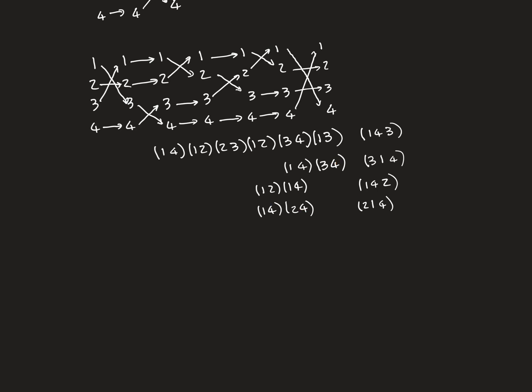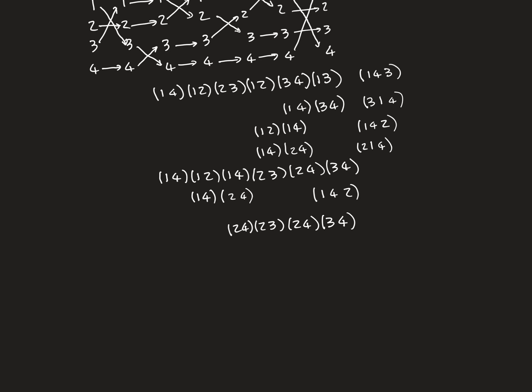Continuing on, we want to bring the transposition involving one further along. We're now looking at (1,4) followed by (2,3). Those don't overlap, so they're commutative — we can just swap them around. So we can rewrite the whole thing with (1,4) moved one position further: you have (2,3), then your (2,4) and (3,4) still in position.